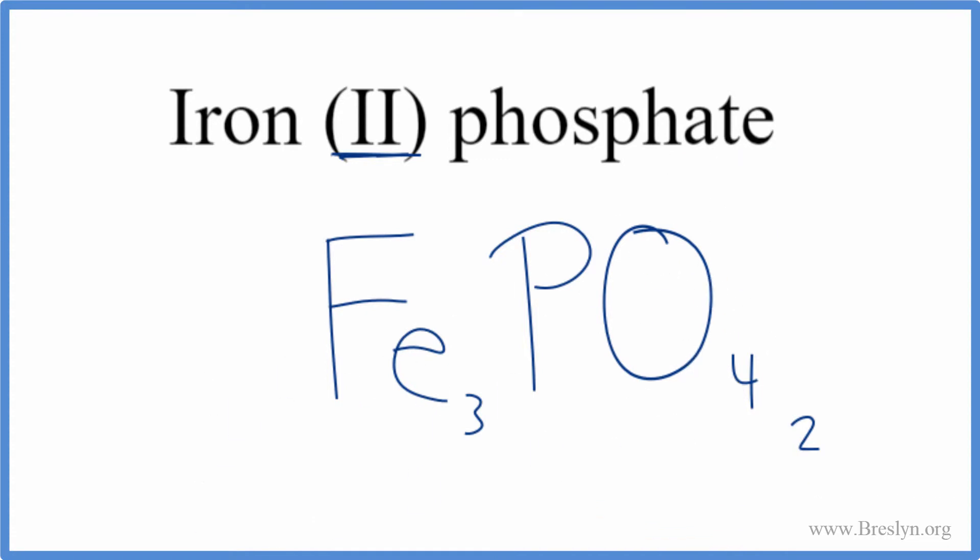And then we need to put parentheses around this phosphate here, because it's a polyatomic ion and we have two of them. So we put parentheses around the phosphate, and that's the formula for iron (II) phosphate.